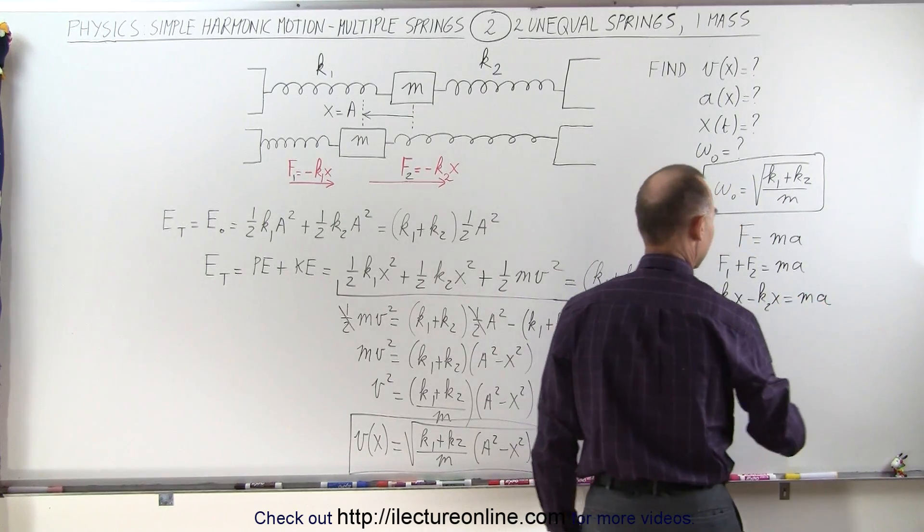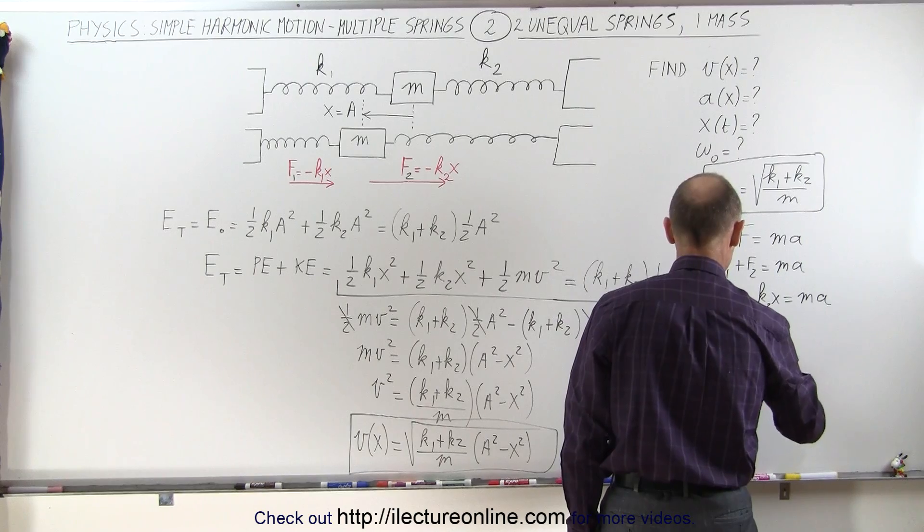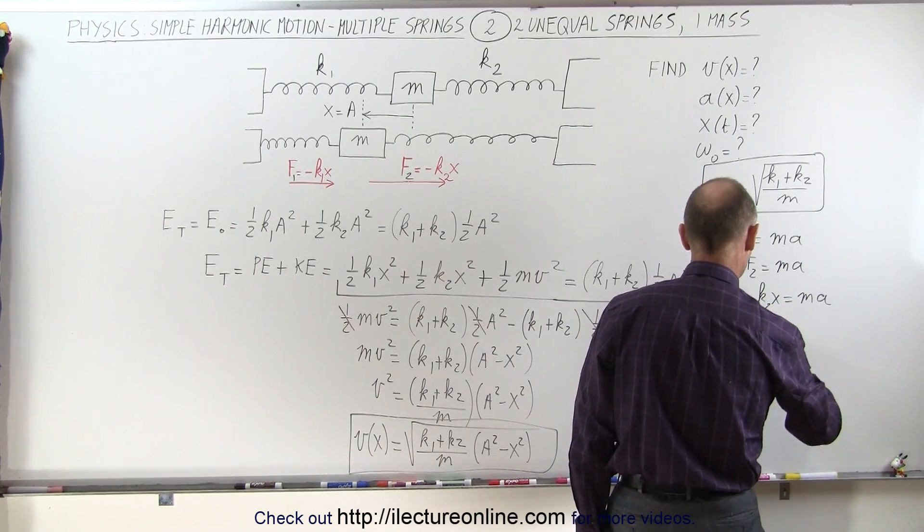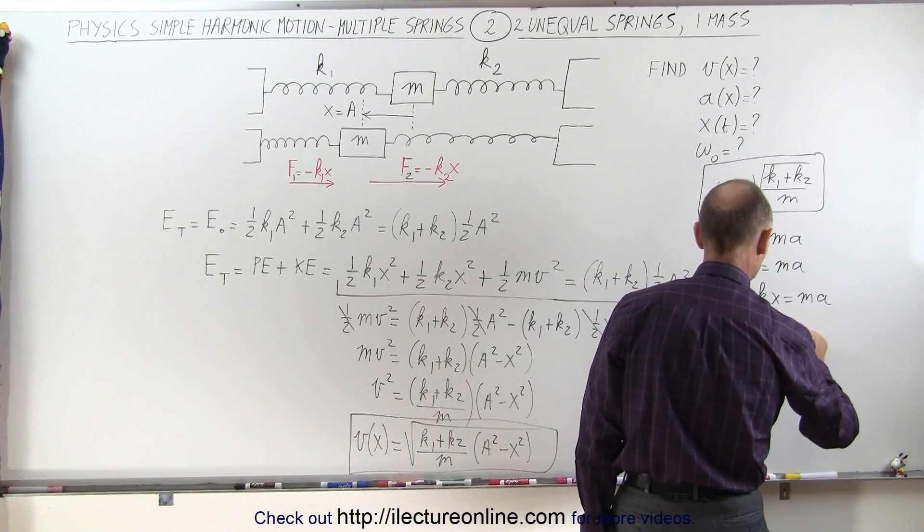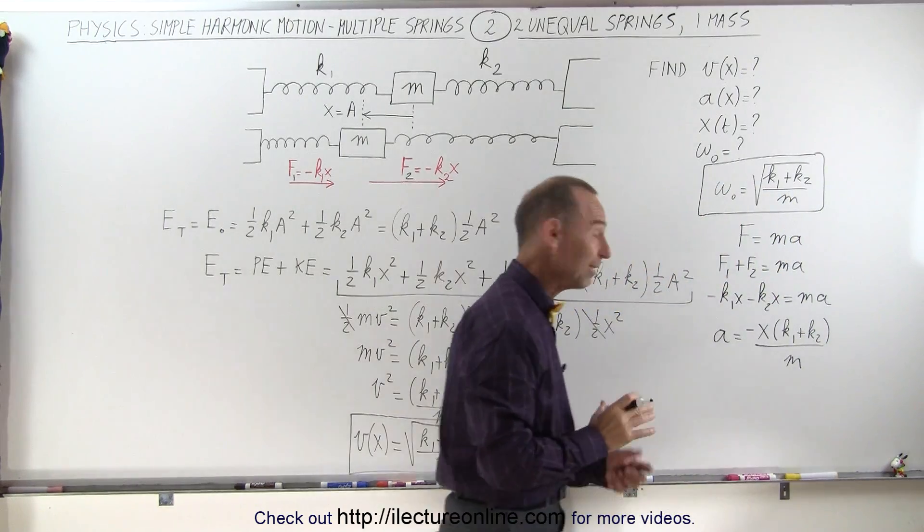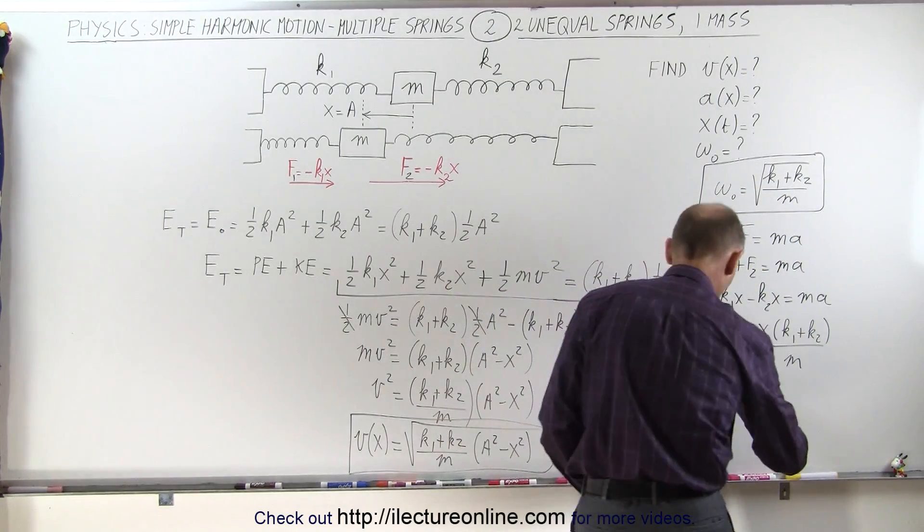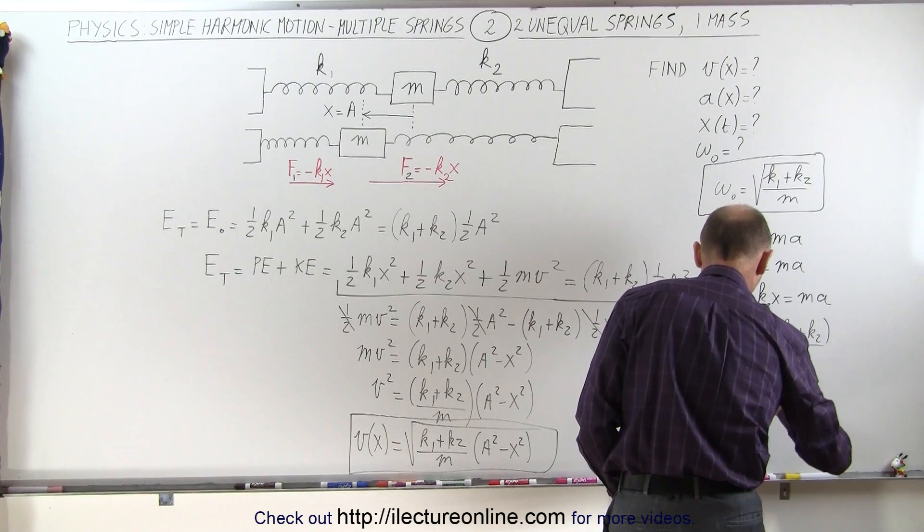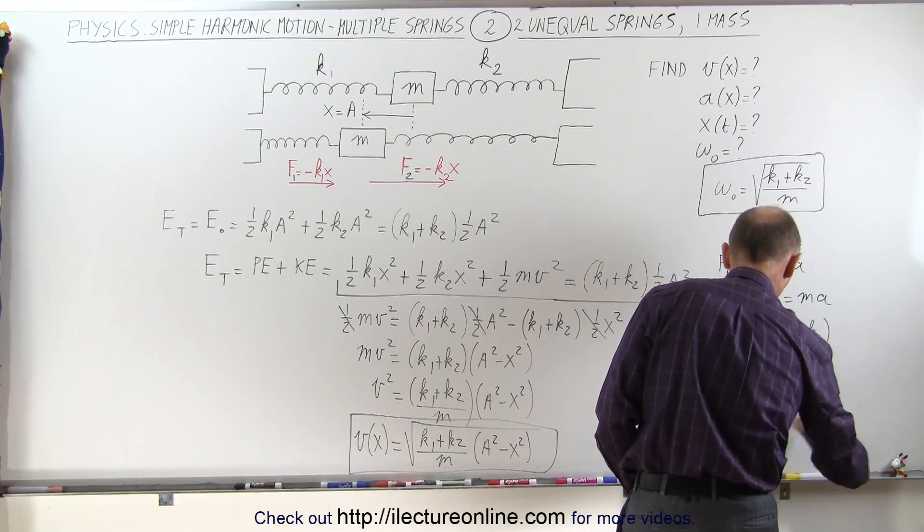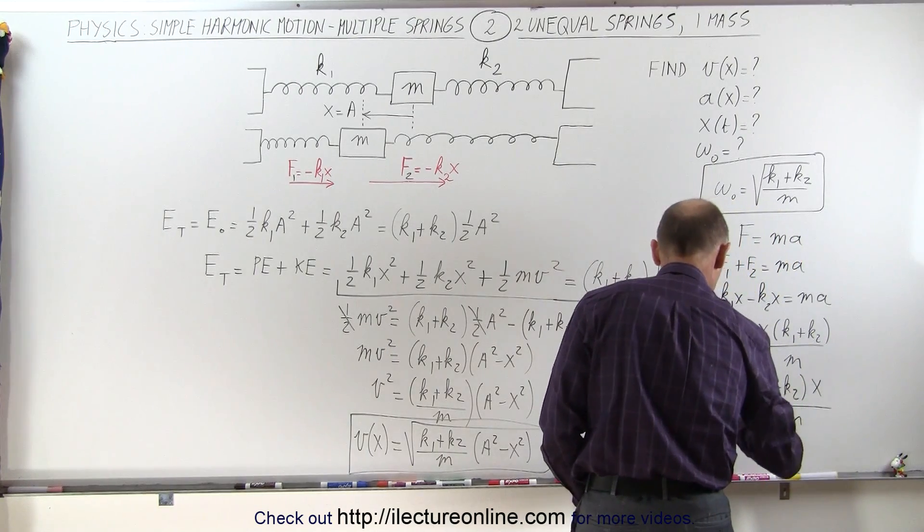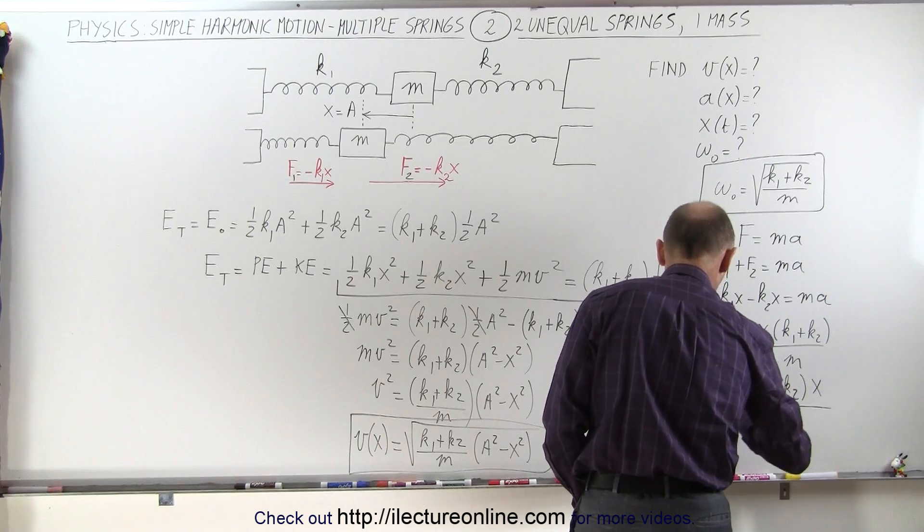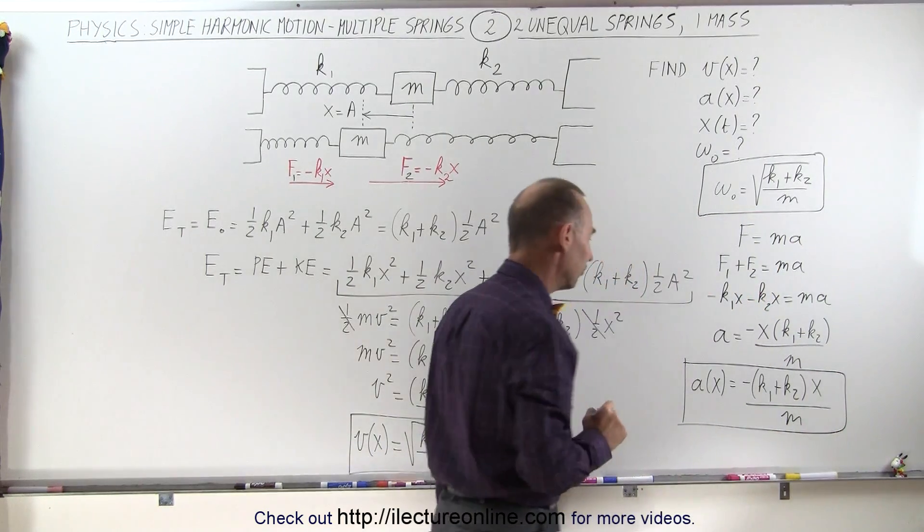Or I can then say that a is equal to, when I factor out an x, I can say that's minus x times k1 plus k2 over m. Or I think they'd rather have that with the k's first. So write a is equal to minus the quantity k1 plus k2 times x over m. And here, we realize that this is the acceleration as a function of position. And that's the third equation we're looking for.